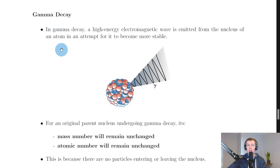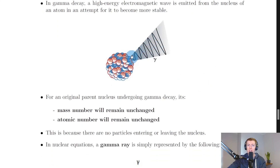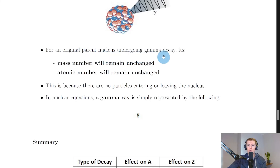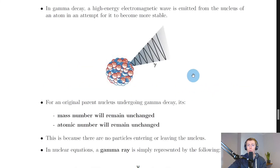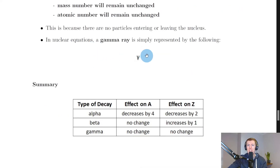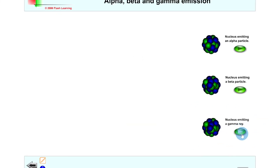Our last type of decay is gamma decay. In gamma decay, a high energy electromagnetic wave is emitted from the nucleus of an atom in an attempt to become more stable. For a parent nucleus undergoing gamma decay, both mass number and atomic number remain unchanged because no particles enter or leave the nucleus — only a wave is emitted. In nuclear equations, a gamma ray is simply represented by the gamma symbol. A simulation shows the unstable nucleus vibrating and then emitting a gamma ray.